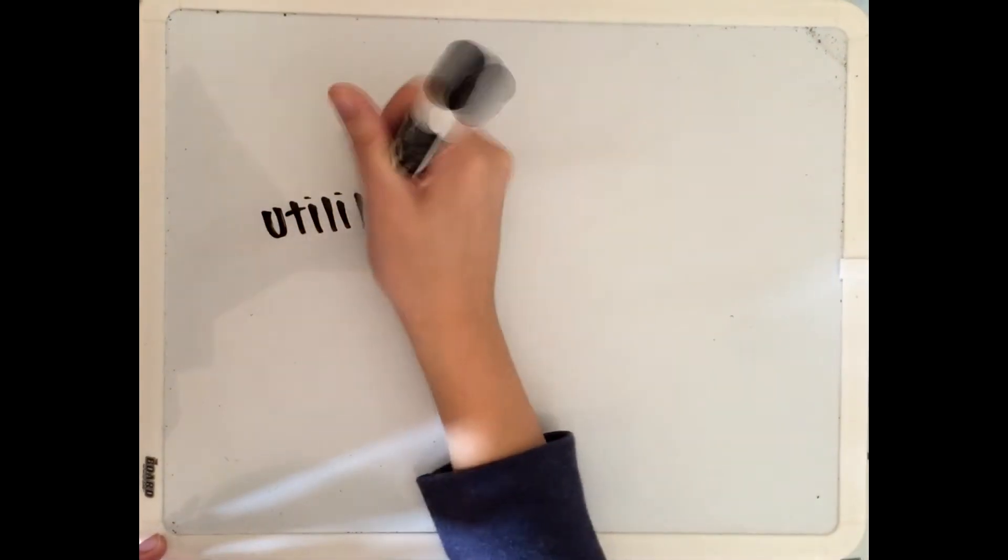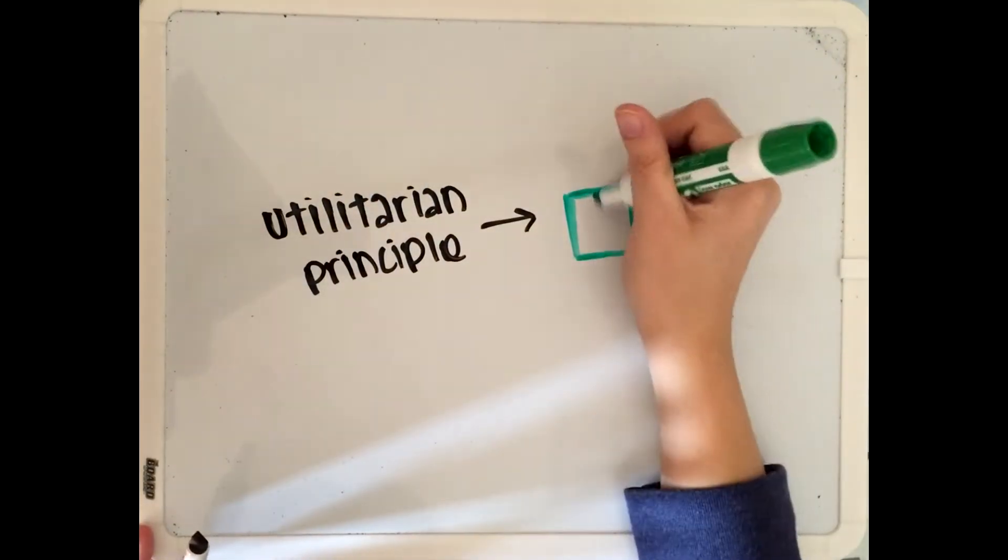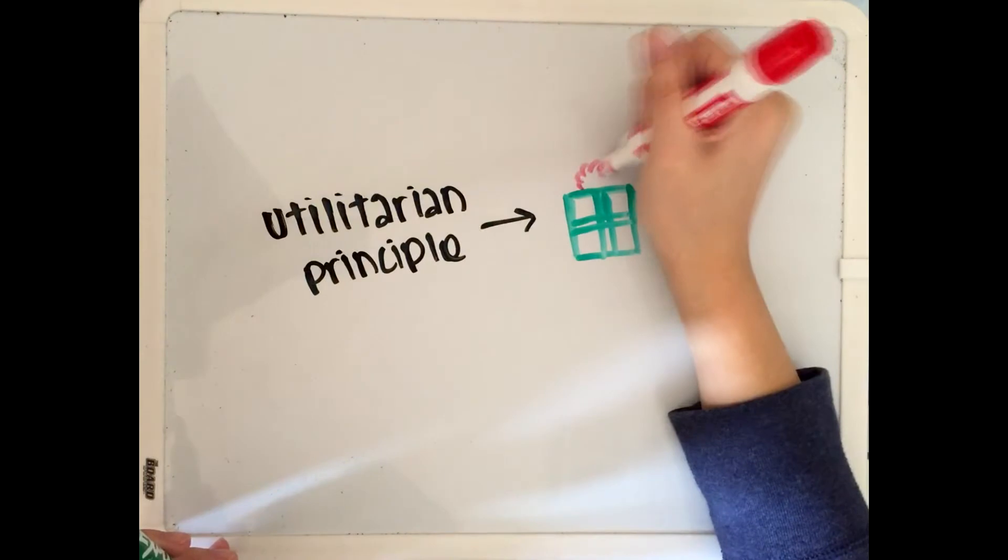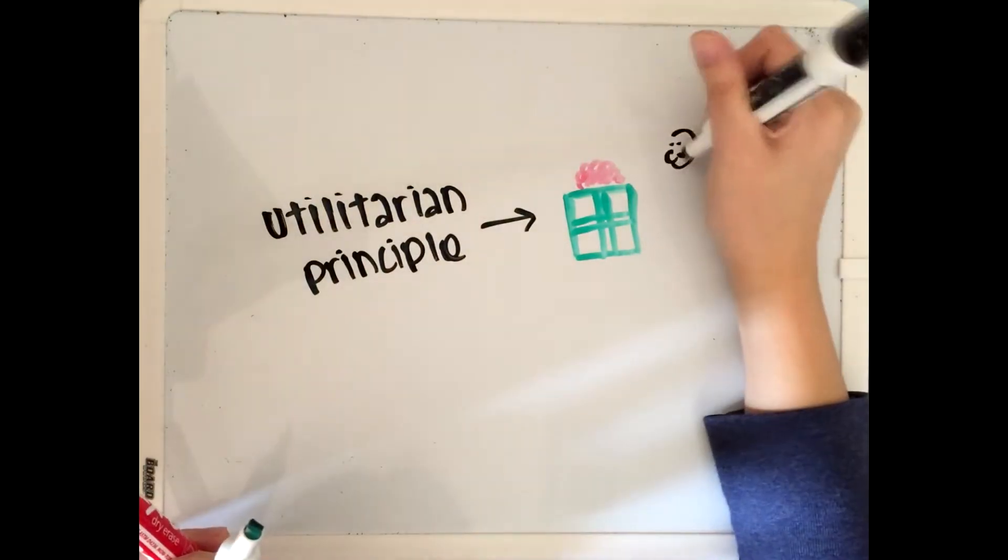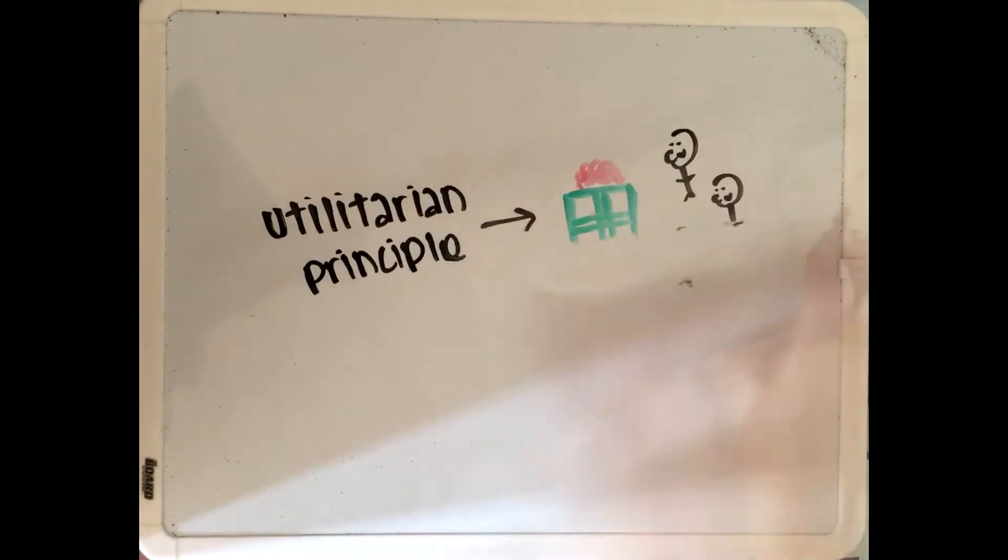The third and final ethical standard is utility elaborated by British philosophers Jeremy Bentham and John Stuart Mill. Utilitarian principles hold something that is right when it produces the greatest practical benefits for the most people.